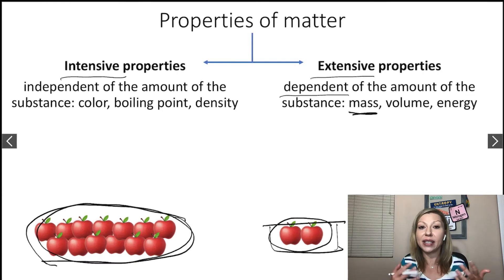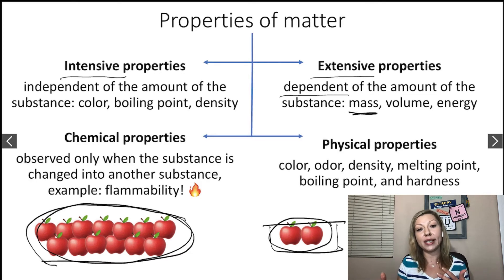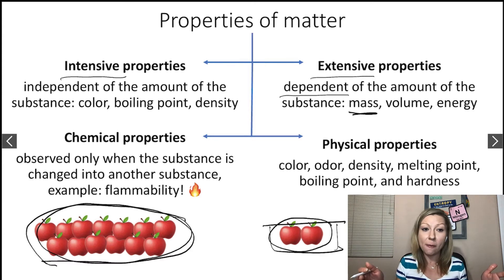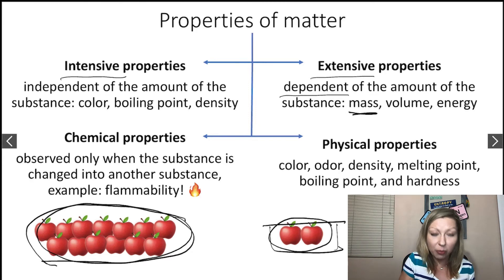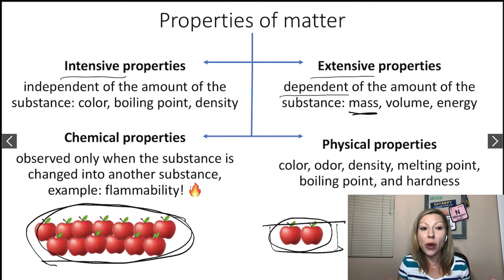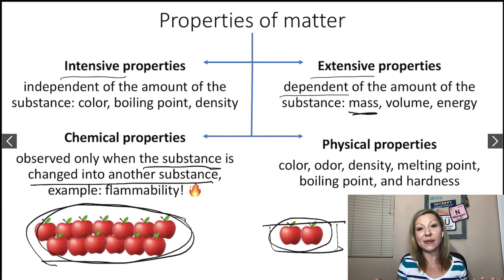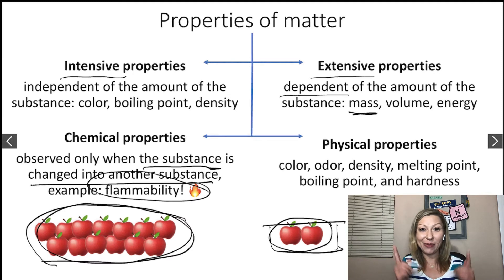We can also classify properties of matter as chemical and physical properties. Physical properties include color, odor, density, melting point, boiling point, and hardness. To observe physical properties, you do not have to change the substance into a different substance. In the case of chemical properties, we observe those only when the substance is changed into another substance — a good example is flammability.